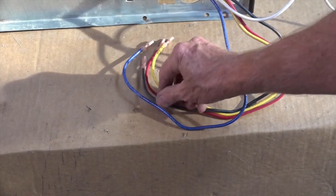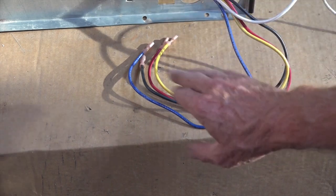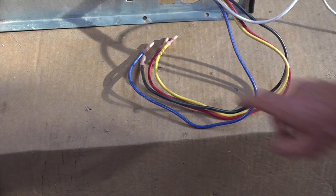These wires here, now there's four of these wires. These are all run winding wires. And what I mean by that is these are all different taps on the run winding.